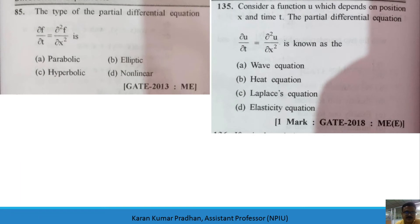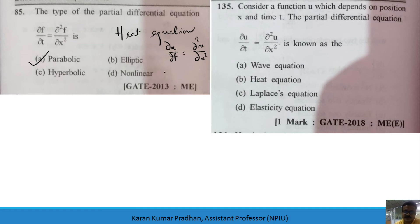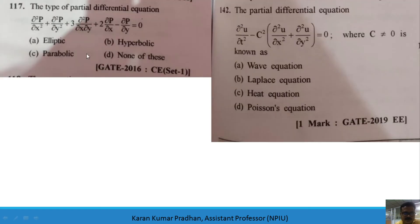The PDE ∂f/∂t = ∂²f/∂x² is parabolic — this is the heat equation. The form ∂u/∂t = ∂²u/∂x² is the standard 1D heat equation, where f represents temperature in the rod. This came in GATE 2018 (Mechanical) — be careful with this type of question. The PDE is known as the heat equation.